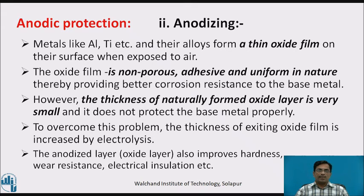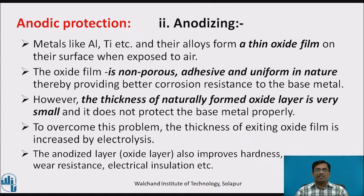The second mechanism is anodizing. Metals like aluminium, titanium, and their alloys form a thin oxide film on their surface when exposed to air. This oxide film is non-porous, adhesive, and uniform in nature, thereby providing better corrosion resistance to the base metal. However, the thickness of the naturally formed oxide layer is very small and does not protect the base metal properly. In anodizing, the oxide layer thickness is increased to improve the protection level.